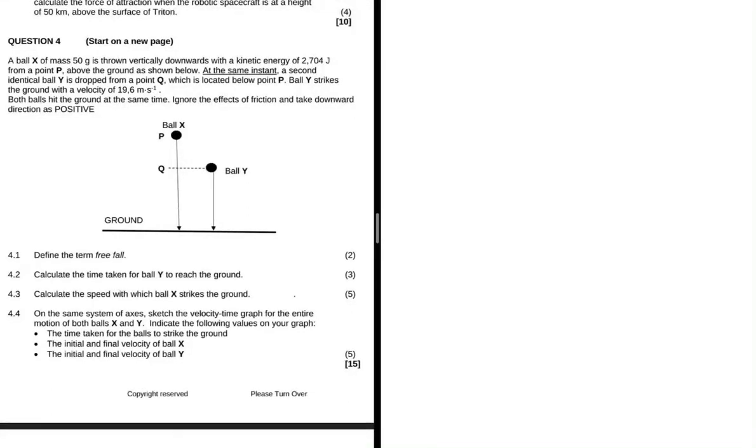Let's do question 4. Question 4 says that a ball of mass 50 grams is thrown vertically downwards with a kinetic energy of 2.704 joules from a point P above the ground as shown below.